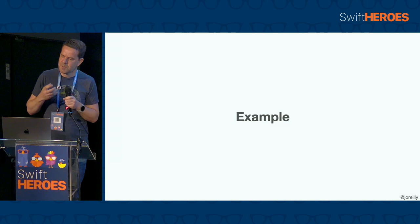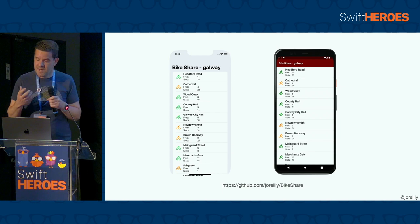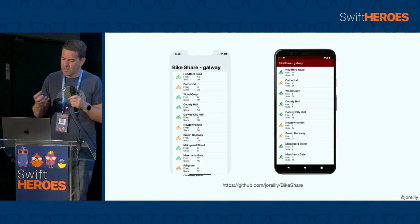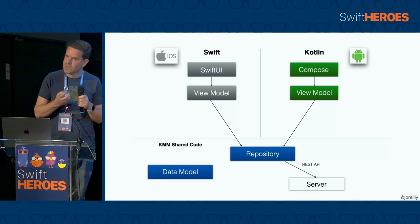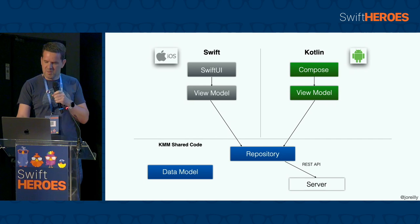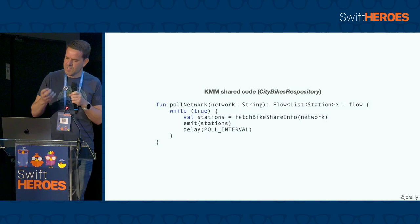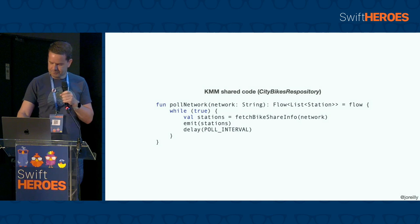We're going to finish up with a small example that illustrates some of the areas we've been comparing. This is based on a sample called Bike Share. For illustration purposes we're focusing on showing a list of bike stations for a particular bike network — one for the city of Galway where I live. The high level architecture: we're building native iOS and Android apps using Xcode and Android Studio, using SwiftUI on iOS and Compose on Android, MVVM for both. We have a shared repository which we're consuming on both platforms — it pulls info for a particular bike network and exposes that as a Kotlin flow.